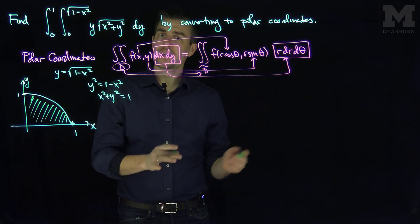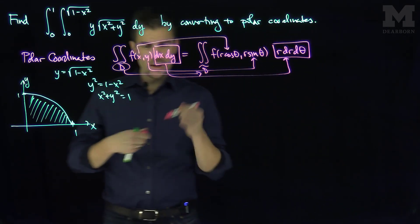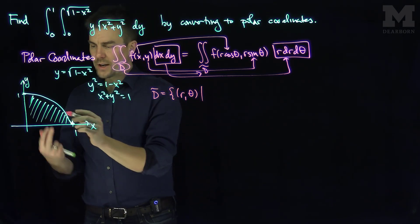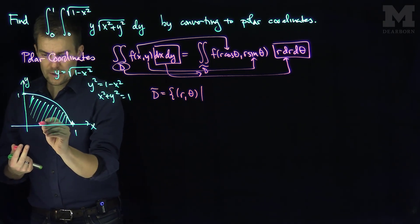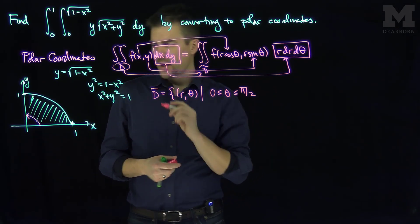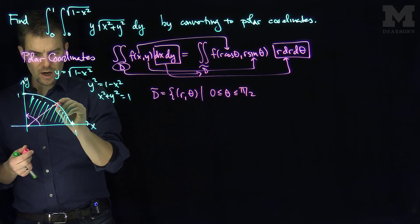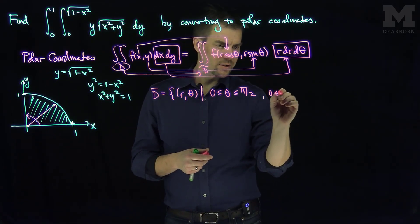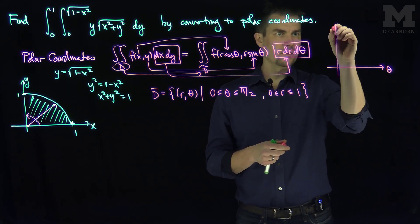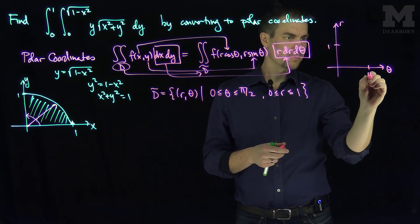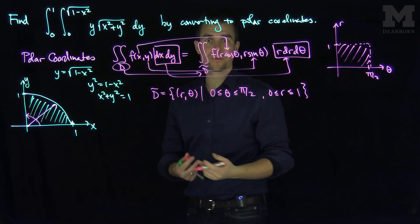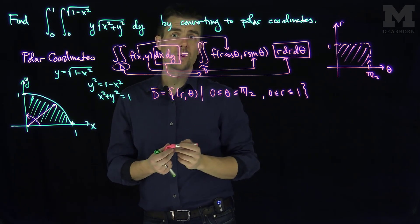This rectangular region of integration can be turned into a polar region of integration by noting that d-tilde in polar coordinates will be the set of all r and theta in our example. The angles theta go between 0 and pi over 2, and the radius goes from 0 up to 1. So in the r-theta axis, this region in polar coordinates is just a rectangular region in polar coordinates. That's why changing the limits of integration from rectangular to polar coordinates works well in this problem.